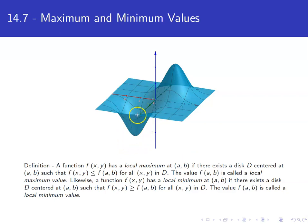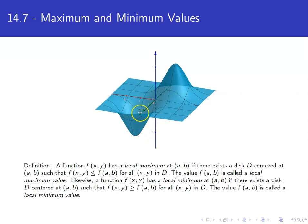We can define a local minimum in the same way. We talk about the bottom of the valley — we take a point (a, b) in the x, y plane and take a disk around it. That little area just happens to contain the lowest point for anything we plug in. The output is what we call the local minimum value.